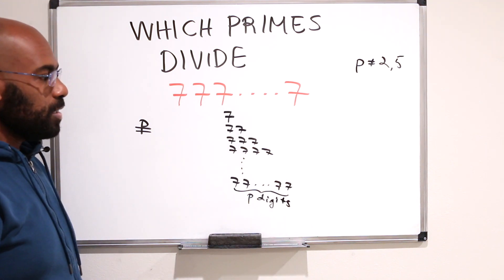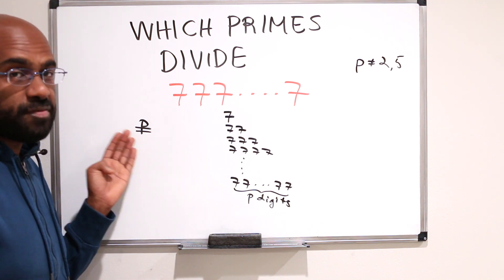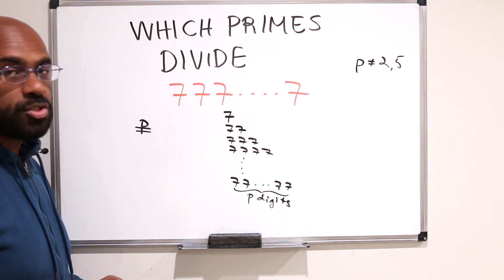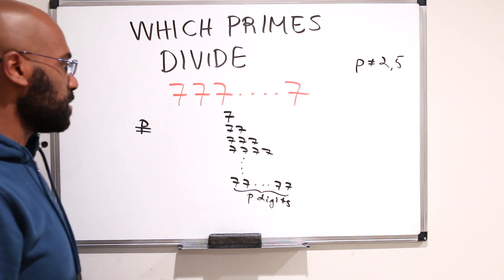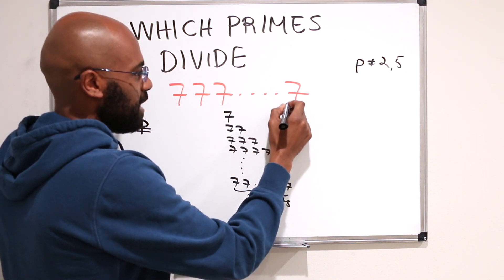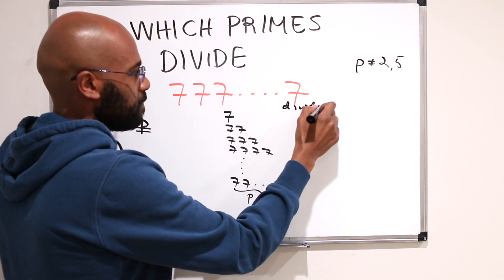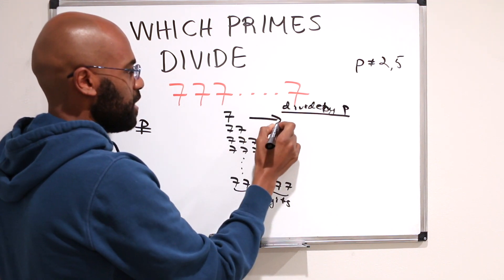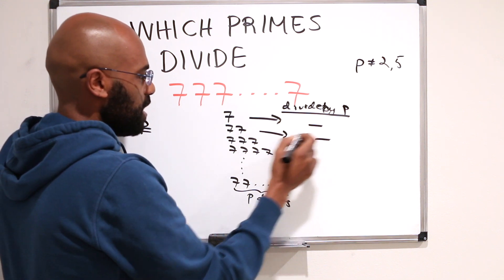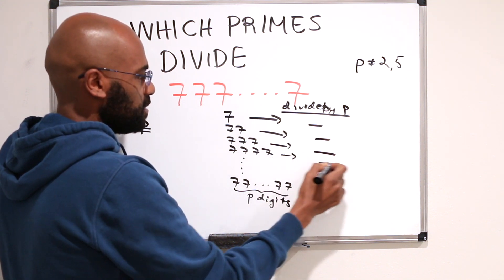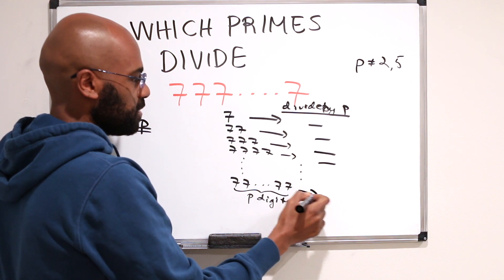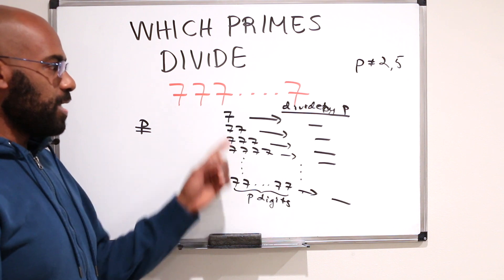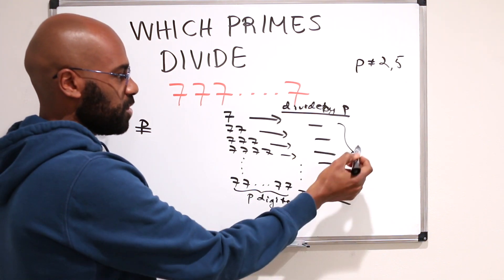Okay, so if one of these numbers has p as a factor, then we're happy. p divides that. So what we'll do is assume for contradiction that that's not the case. So if we were to divide each of these by p, we'd actually get some kind of remainder. Now, since we made the assumption that p doesn't divide any of these numbers, none of these remainders are 0.